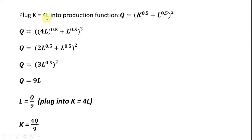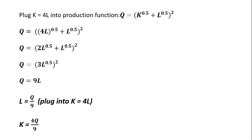The next step: take K equals 4L and plug it into the production function. Where we have K, we now substitute 4L, so it becomes 4L all raised to the 0.5 power. Since 4 to the 0.5 is 2, we get 2L to the 0.5, and adding these terms in parentheses gives 3L to the 0.5. Squaring what's in parentheses: 3 squared is 9, and L to the 0.5 squared is just L, giving Q equals 9L. Solving for L: L equals Q over 9.